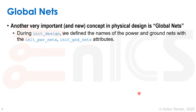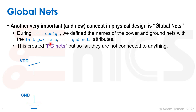Global Nets is an important concept. It's new to us because we didn't discuss it before when we were doing synthesis and had no power and ground. During init_design, we defined the names of the power and ground nets with the init_power_net and init_ground_net attributes, putting in names like VDD and VSS. This created what we call PGNets - PG for power and ground. So far they're just a virtual name - a concept of a net called VDD and a net called ground, but it doesn't really mean anything yet.